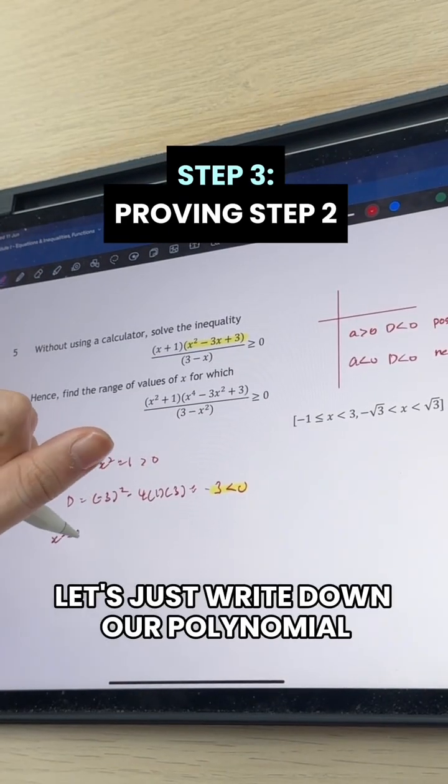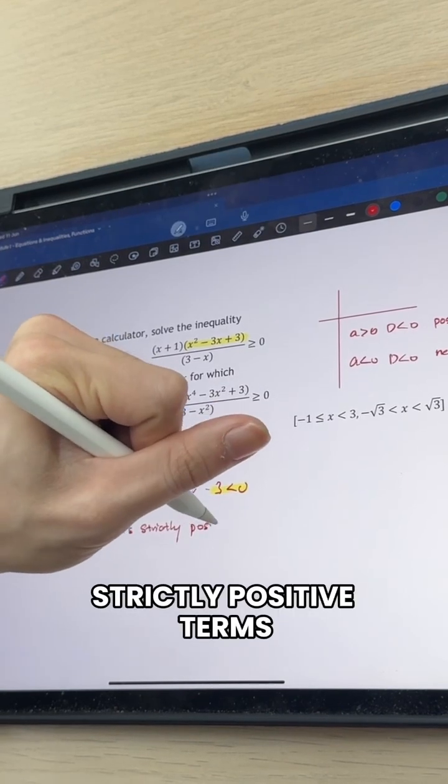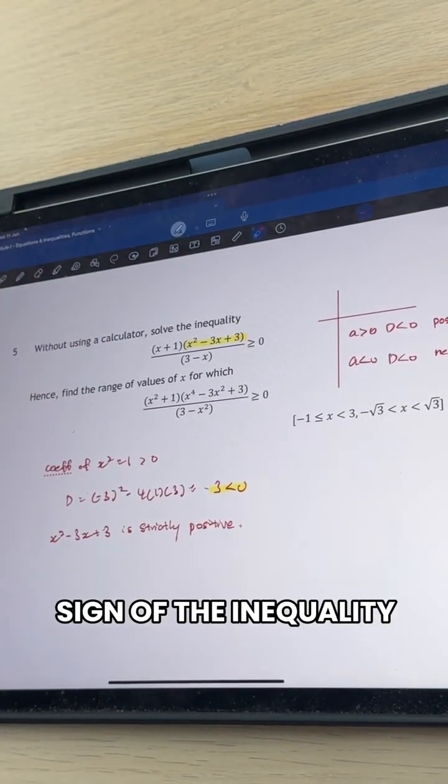Let's just write down our polynomial x squared minus 3x plus 3 is strictly positive. Good. Strictly positive terms means we can divide both sides by the term and it does not affect the sign of the inequality.